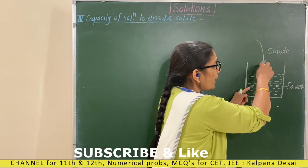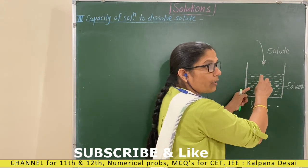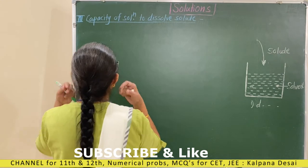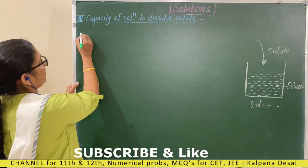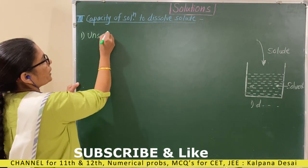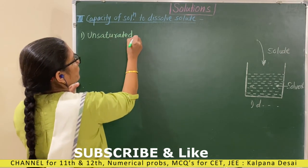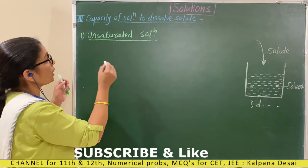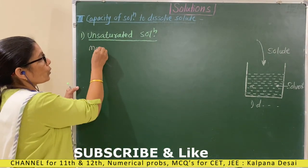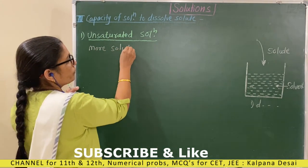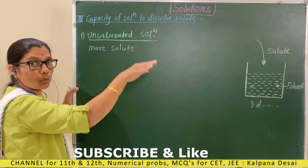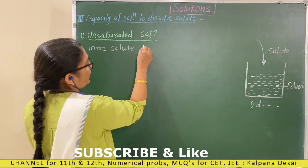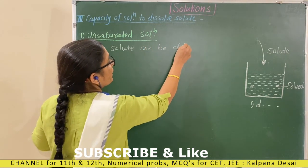When solute is added and dissolves, that solution is called an unsaturated solution. Unsaturated solution means in this solution more solute can be dissolved. That solution where sugar can still dissolve is an unsaturated solution — more solute can be dissolved.